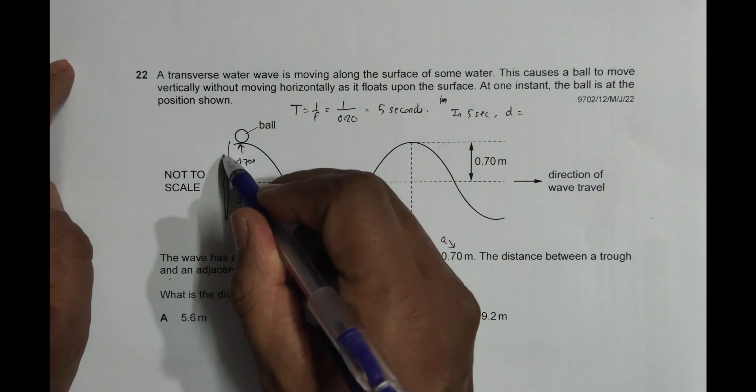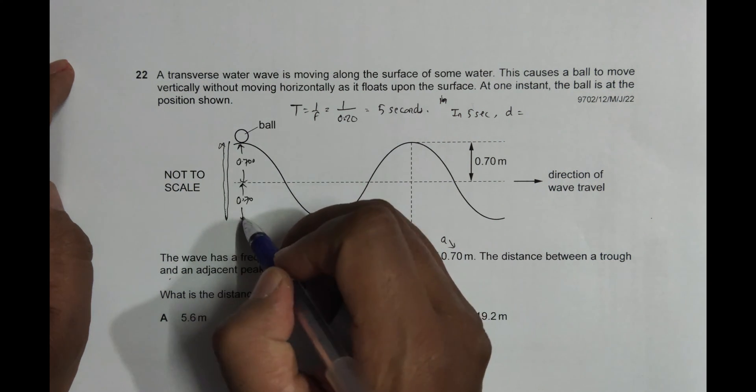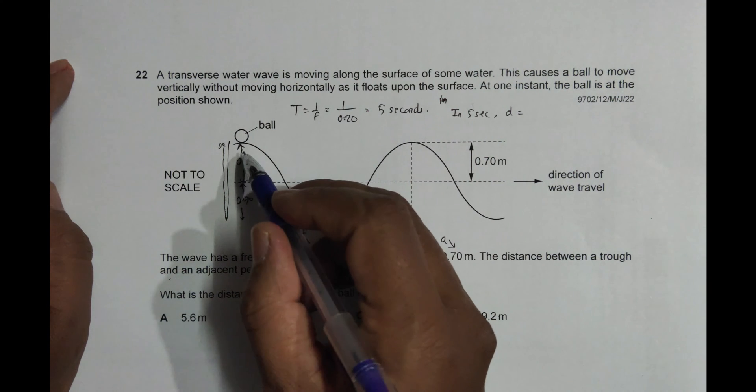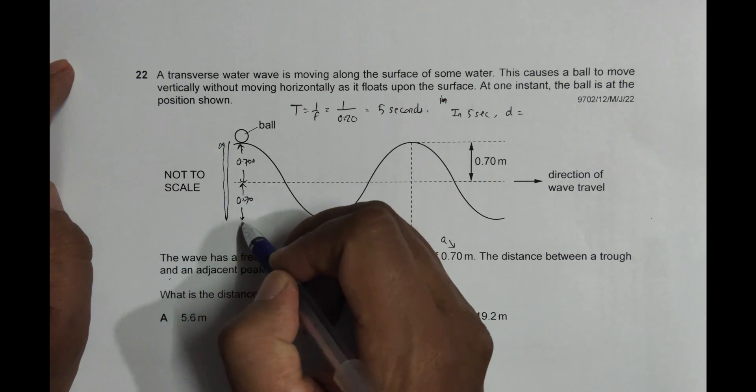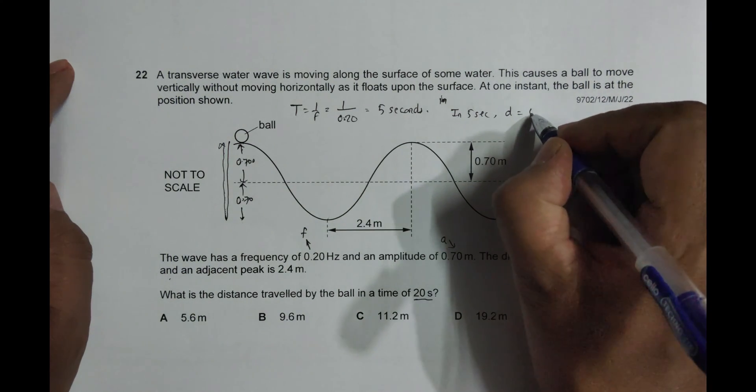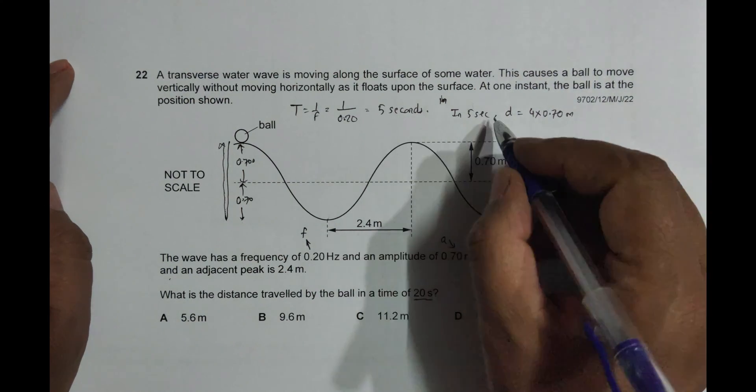...it moves like this from here to here. So it is one, two, three, four—four times 0.70 meters. So the distance is equal to 4 into 0.70 meters in five seconds.